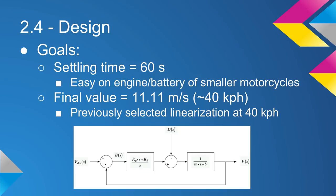We chose this speed because of the previously discussed linearization of the rolling resistance and wind drag. Below you can see a diagram of our system including the controller and the disturbance input from a hill.